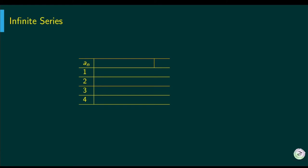In this video we are going to talk about infinite series. First, consider the sequence of natural numbers 1, 2, 3, 4, and it continues — 5, 6, 7 — increasing by one. Here we are only considering the first four terms of the sequence, and from this we can construct a series.